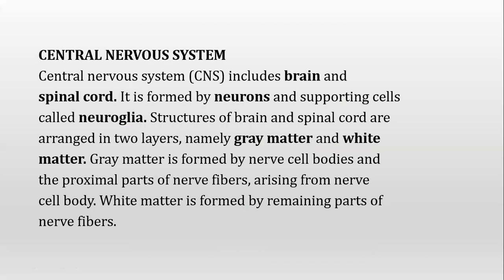The brain and spinal cord are composed of neurons. The neuron is the structural and functional unit of the nervous system. Along with neurons, there are other cells called neuroglia, also known as supporting cells of the nervous system. The brain and spinal cord are arranged in two layers named according to color: gray matter and white matter. Gray matter is formed by the nerve cell bodies.